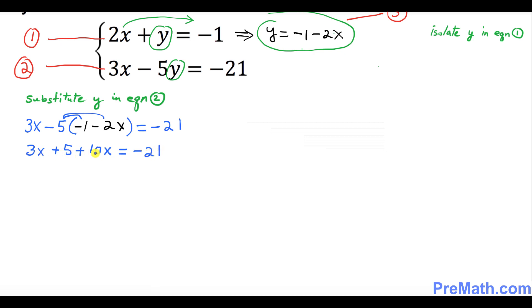3x plus 10x becomes 13x plus 5 equals negative 21. Move this 5 to the other side, it becomes negative 5.